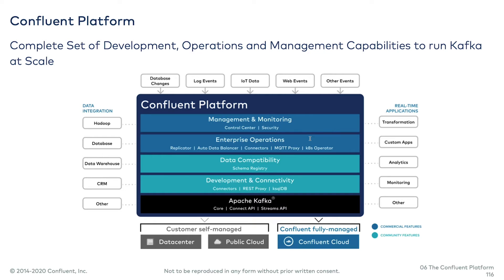Then enterprise operations: you've got Confluent Replicator for operating clusters between data centers or between cloud regions, Auto Data Balancer to keep partition data balanced between brokers, and the Kubernetes operator, which is an absolutely huge thing. If you want to run your own deployment in Kubernetes, we've got a custom operator that makes all elements of the platform run natively and properly in Kubernetes. And of course, you've got management and monitoring through Control Center and enterprise-grade security as well.